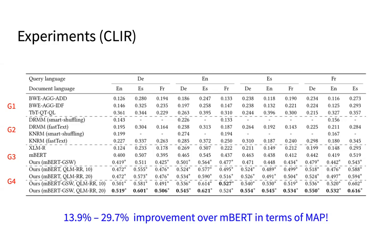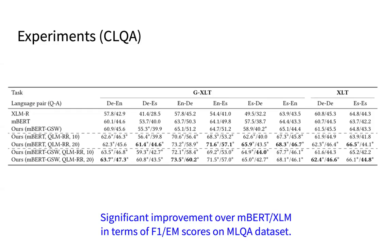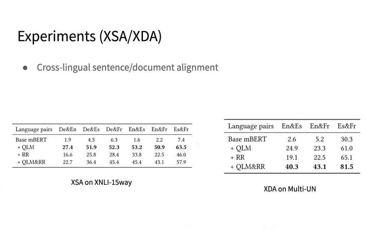Here are the overall results — feel free to pause and read the charts more carefully. Overall, we achieve 14 to 30 percent improvement over multilingual BERT in terms of MAP on different language pairs. Although our model is not designed for extractive QA, we still see significant improvement over multilingual BERT and XLM in terms of F1 and EM score on the MLQA dataset.